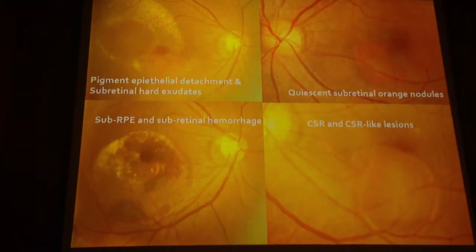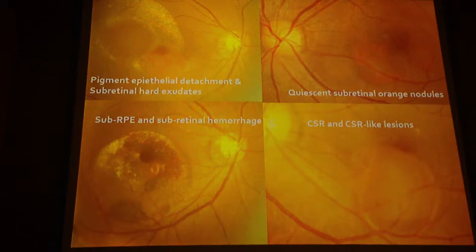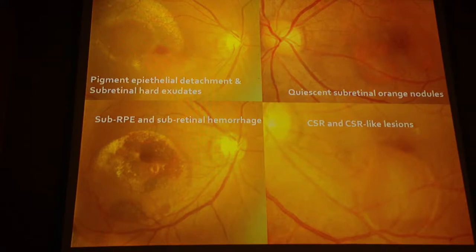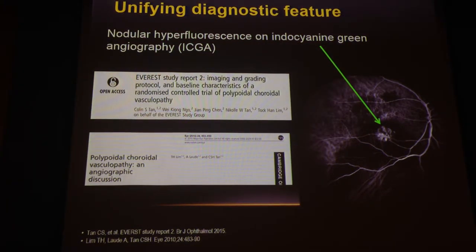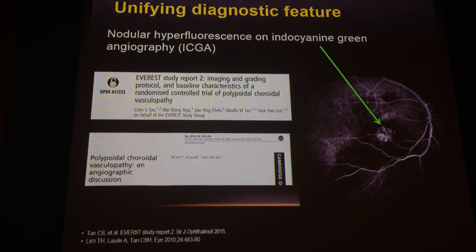PCV can present in a variety of ways. They can sometimes occur with quiescent orange sub-retinal nodules, sub-RPE and sub-retinal hemorrhages and exudates, and pigment epithelium detachments. In some cases they may just have serous fluid, initially mistaken for central serous retinopathy, and in other cases a patient with central serous retinopathy can eventually develop PCV on follow-up angiogram. The unifying diagnostic feature of PCV is the presence of nodular hyperfluorescence on indocyanine green angiography, and we need ICGA to diagnose PCV.